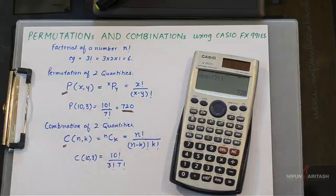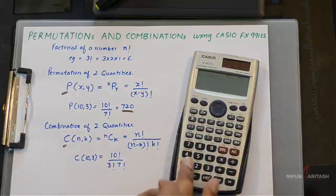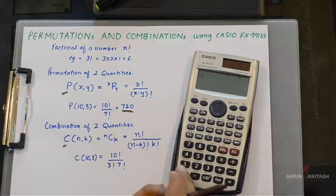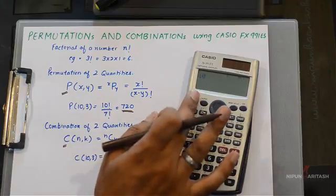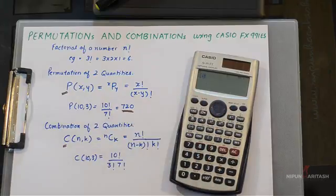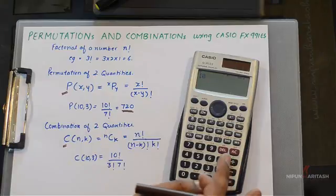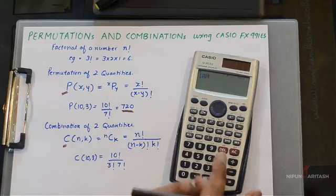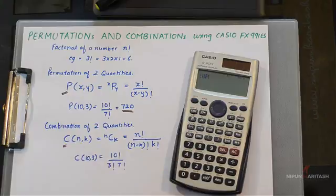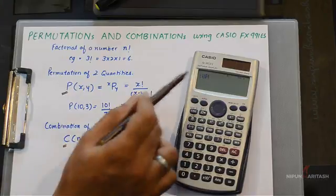And an alternate way of doing that is doing it directly. How can you do that? You simply say 10, then you press shift and press the x button whose alternate function is permutation. So you get 10 P